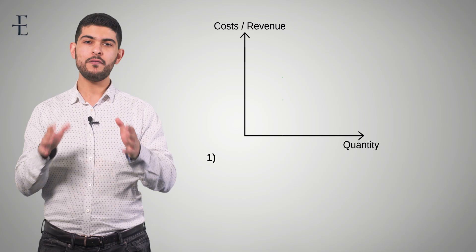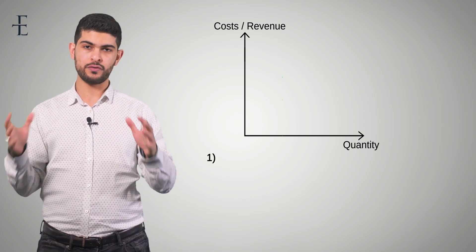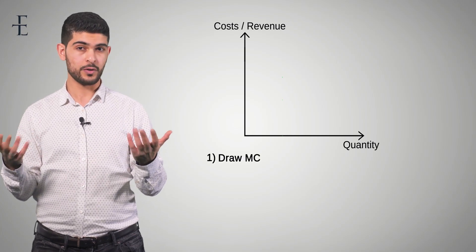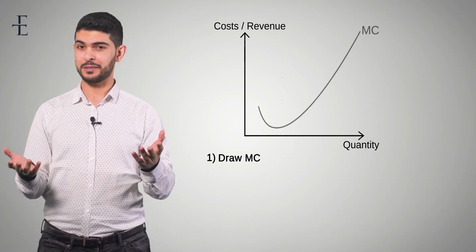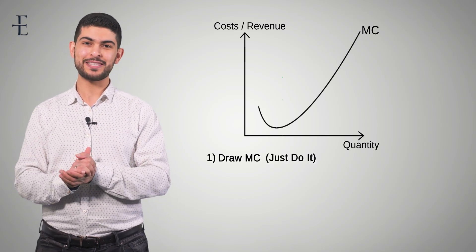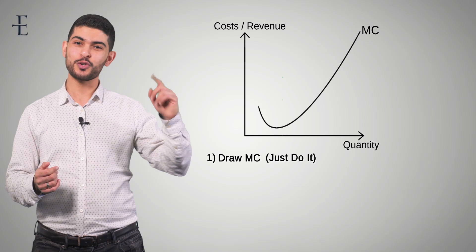Step one. Every single time you have to do a cost and revenue diagram, I always want you to start with the MC curve. Now what does the MC curve look like? It looks like a Nike tick. And the best thing about Nike is their slogan: just do it. So step one is just do it. Draw the MC curve.